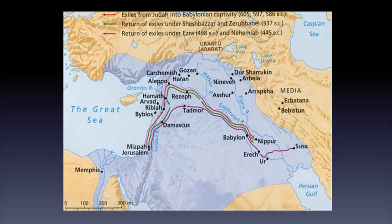The people rebuilt the temple — scholars refer to this as the second temple — and the people found themselves back in Judah. But they were still under Persian rule, heavily taxed, unclear about what God expected of them, and thoroughly infiltrated with different types of religions and superstitions. They were unprotected and surrounded by hostile nations, and attempts to rebuild the walls of Jerusalem were strongly resisted.